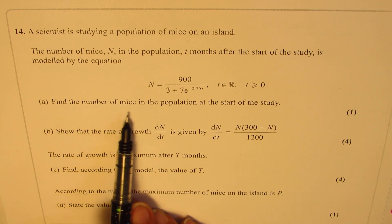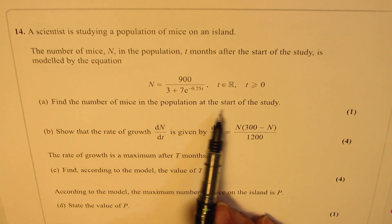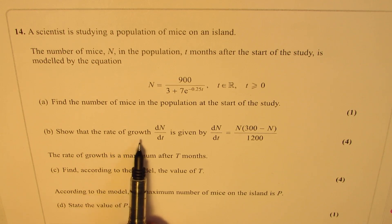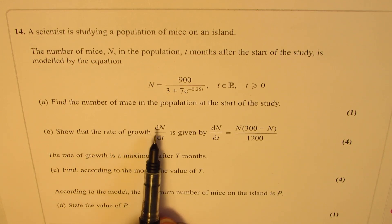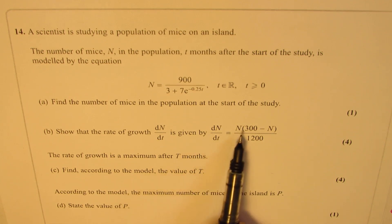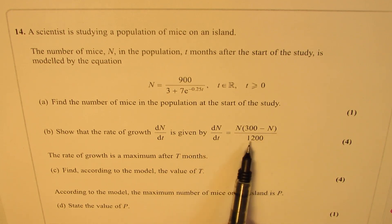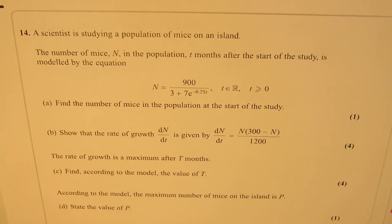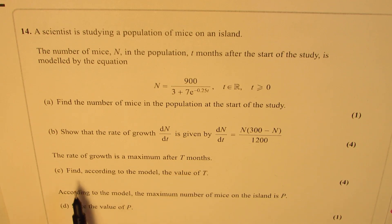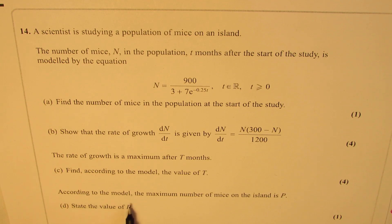Part A: Find the number of mice in the population at the start of the study. Part B: Show that the rate of growth dn/dt is given by dn/dt equals n times (300 minus n) over 1200. The rate of growth is maximum after t months. Find, according to the model, the value of t. According to the model, the maximum number of mice on the island is p. State the value of p.